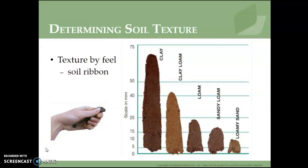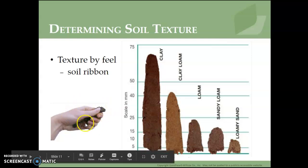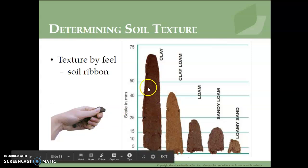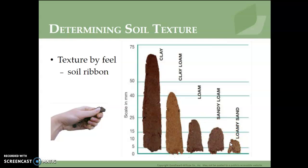Determining soil texture — texture by feel is called a soil ribbon. You can see in this picture, they're putting their thumb and index finger together, creating friction and trying to squeeze the soil, like you do with Play-Doh or modeling clay. The longer the ribbon, the more clay is in it. This is pure clay, followed by clay loam, loam, sandy loam, and loamy sand. The more sand in that soil, the smaller the ribbon; the more clay, the longer the ribbon.